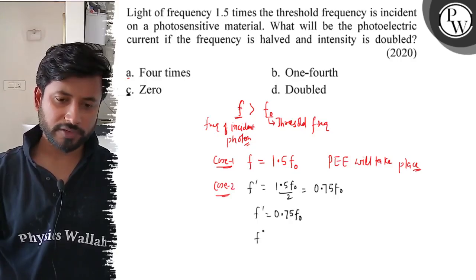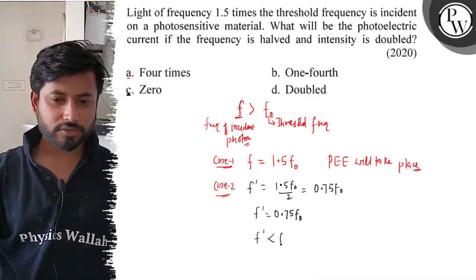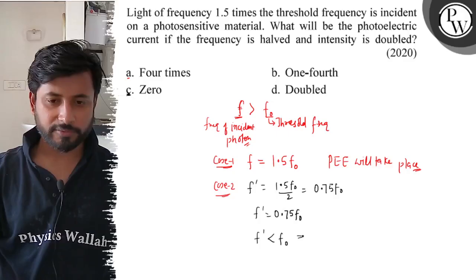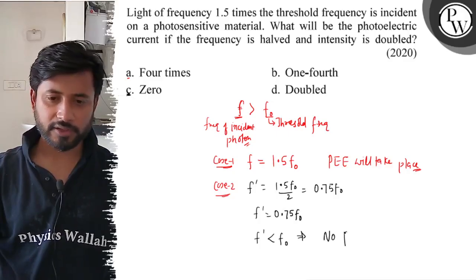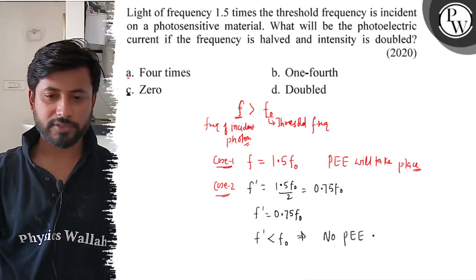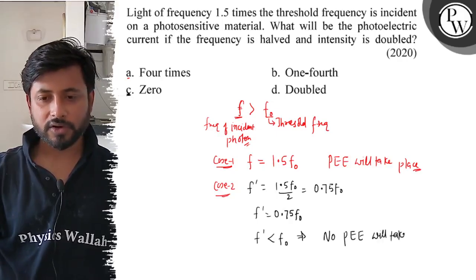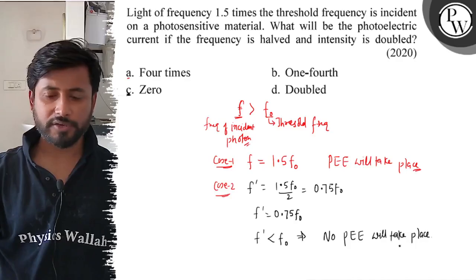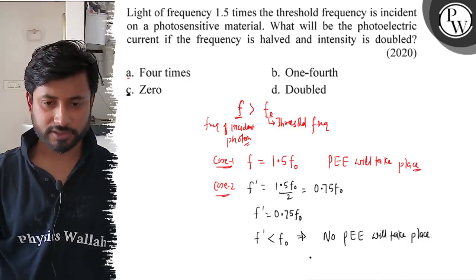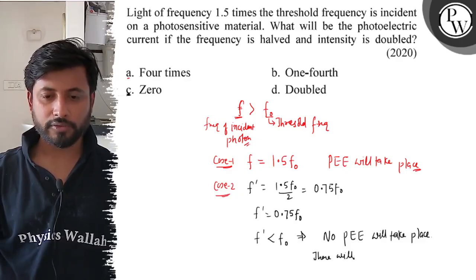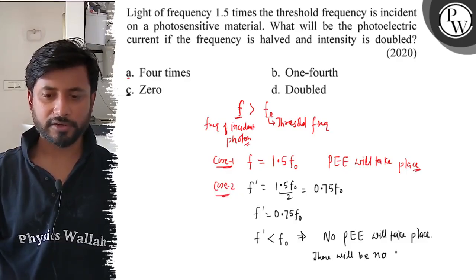This means the frequency is now less than the threshold frequency. It means there will be no photoelectric effect. There will be no photoelectric emission. And if there's no photoelectric emission, that means no current. There will be no current.